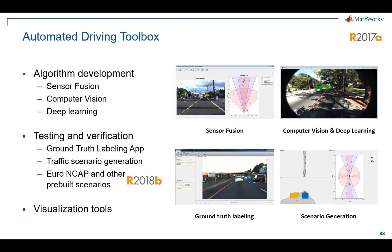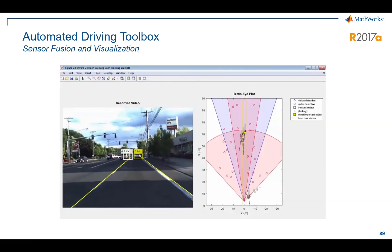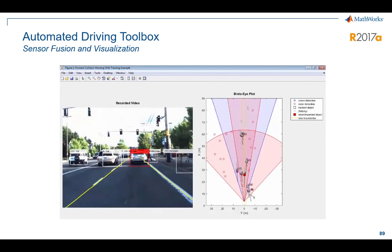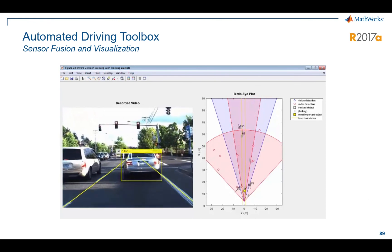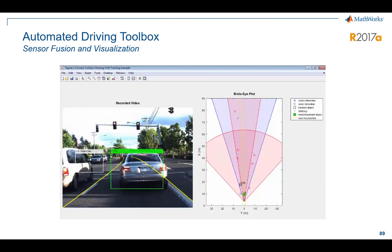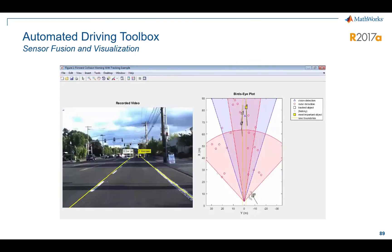On the automated driving side, this is a very popular area with many customers, and there's a toolbox designed to meet those needs. It covers sensor fusion, a combination of computer vision and deep learning work, scenario generation — including scenarios too dangerous or implausible to do on the road — and ground truth labeling of data sets to train models. This example shows how you might use the Automated Driving System Toolbox to understand sensor fusion: how radar, video, and other sensors come together for object detection, with the actual video shown on the left so you can understand what the system is doing.